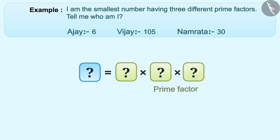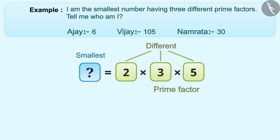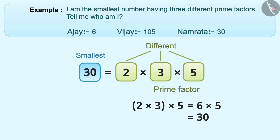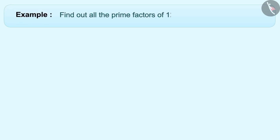That means we have to find out the smallest number with three different prime factors. The prime factors should be small but must be different. So we will choose 2, 3, and 5. Multiplying them: 2 × 3 × 5 = 30. So we can say that Namrata gave the correct answer.